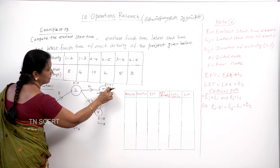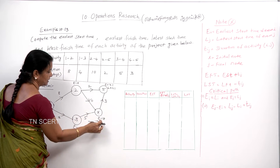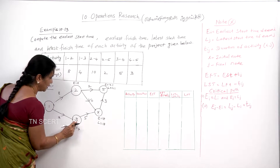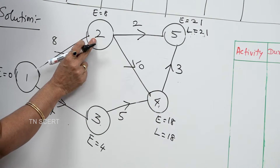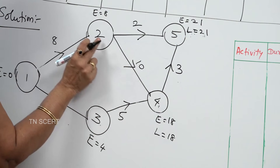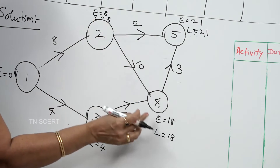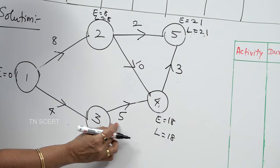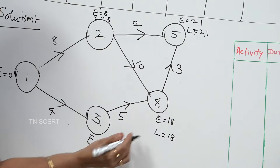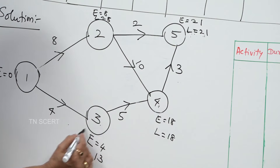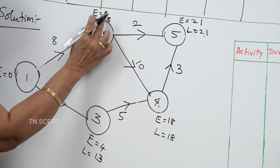Last is the final. This duration is the minus. Now for node 4, 18 minus 10 equals 8, giving L equal to 8. And 18 minus 5 equals 13, giving L equal to 13. These two values are not equal. But these two values, when equal, indicate a critical activity.